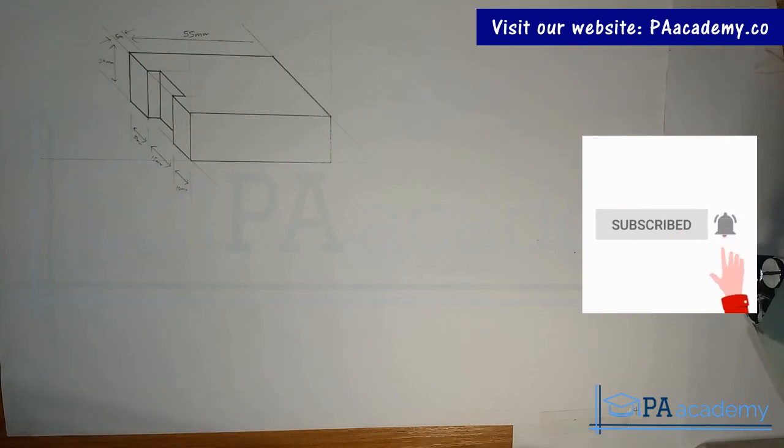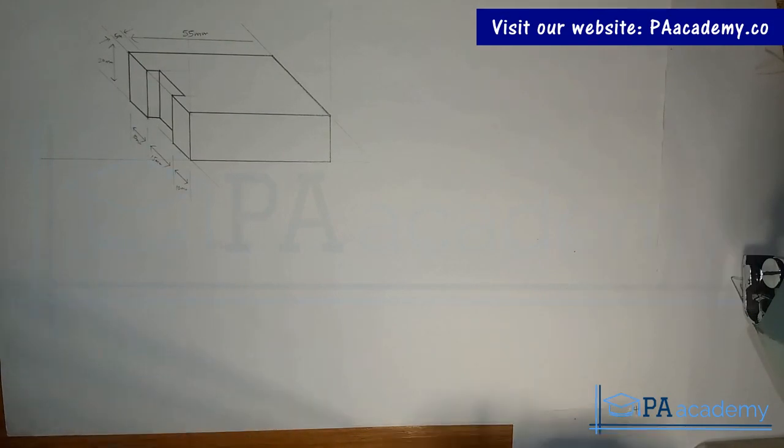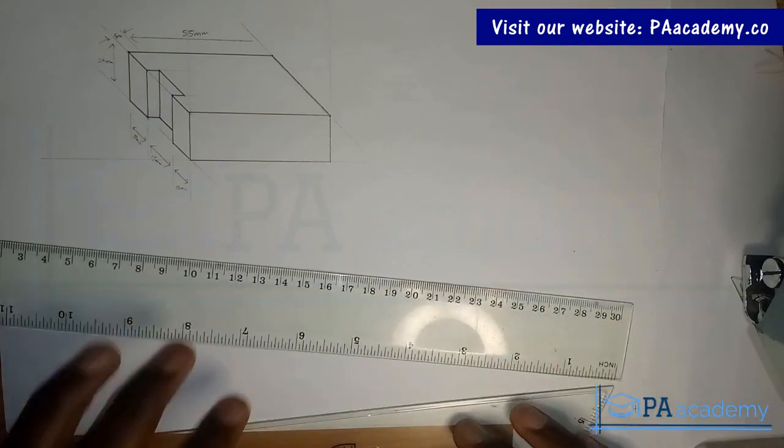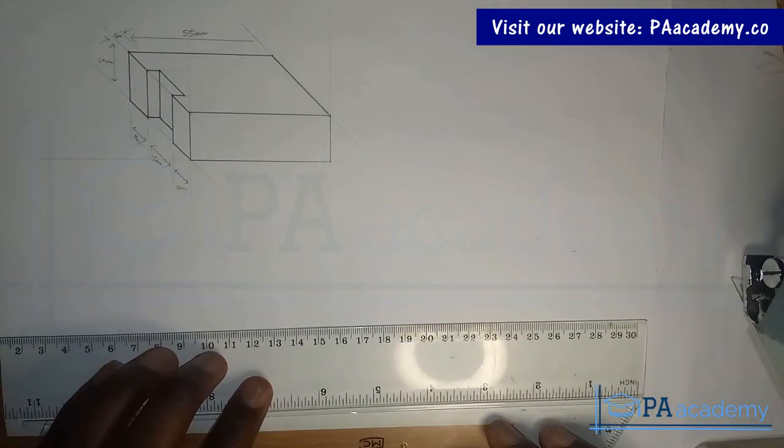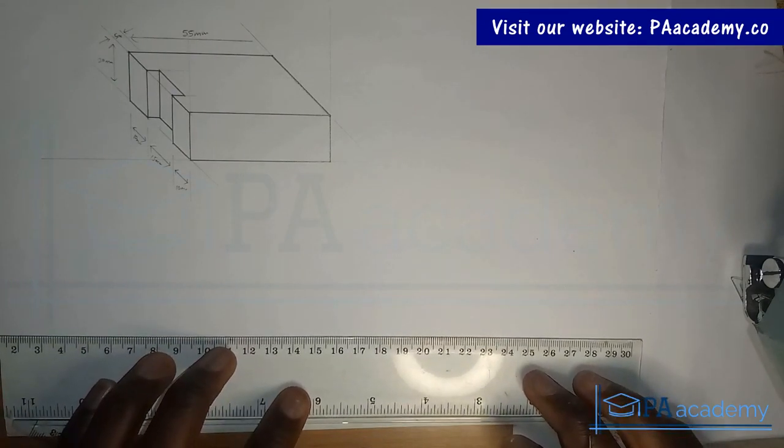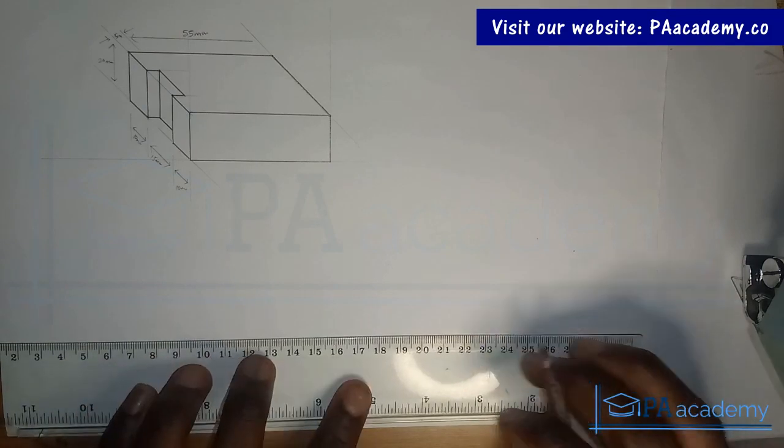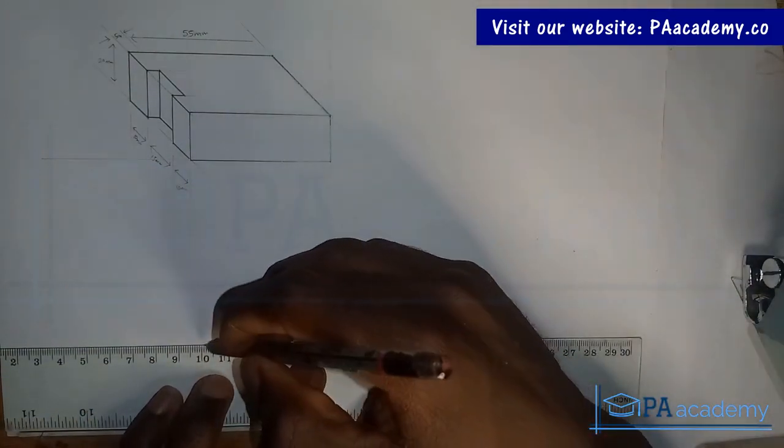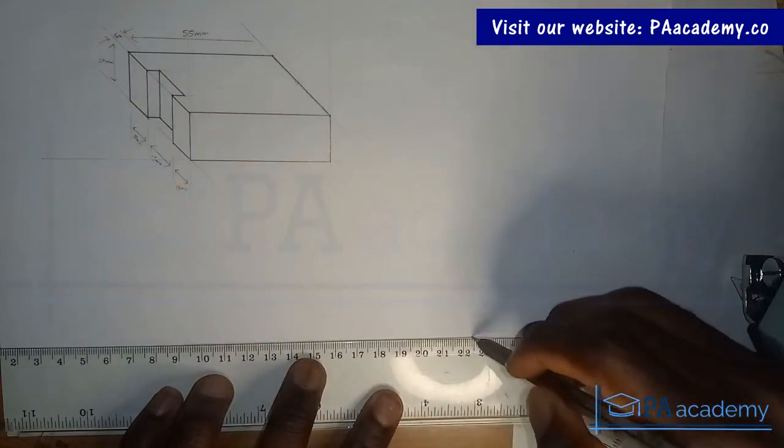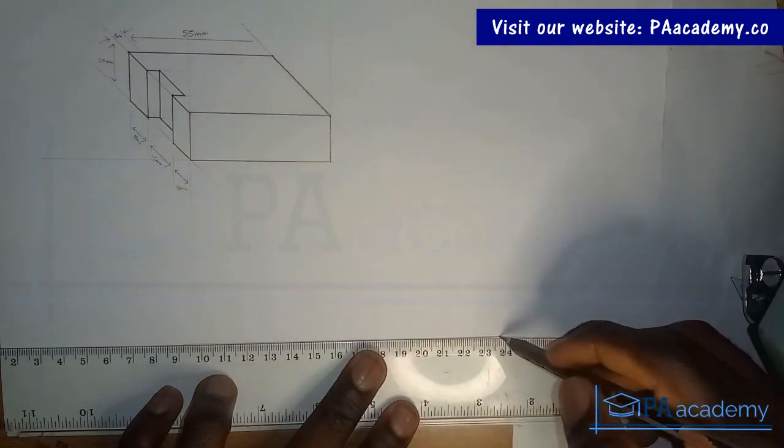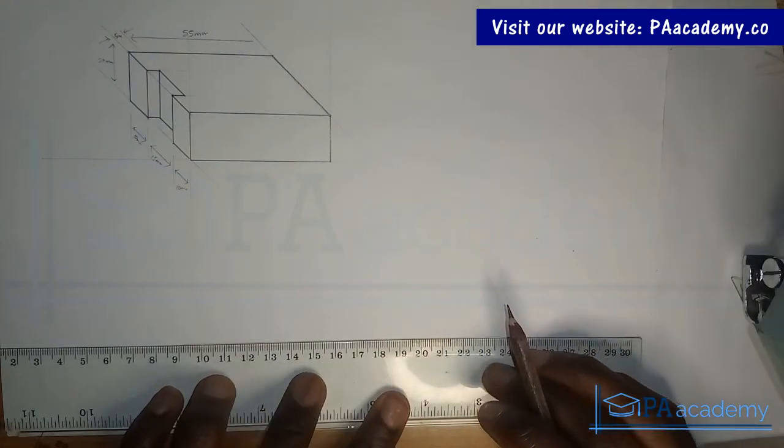Did I just mention isometric? Sorry, Oblique. Oblique. Alright, so let's get started. Okay, so don't forget we are dealing with Oblique. So I mentioned isometric before. Sorry for that. I might not have enough time to edit the part I mentioned isometric. But hey, we are dealing with Oblique.